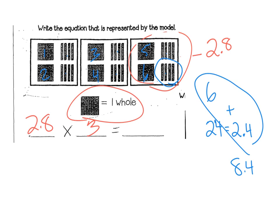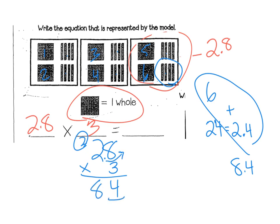Combining six wholes and two and four tenths gives me the answer of eight and four tenths — that should be my final answer on this model. Going back to check with the algorithm: eight times three is 24, three times two is six plus an extra two is eight. Moving the decimal correctly, I get eight and four tenths, and that matches what I analyzed.